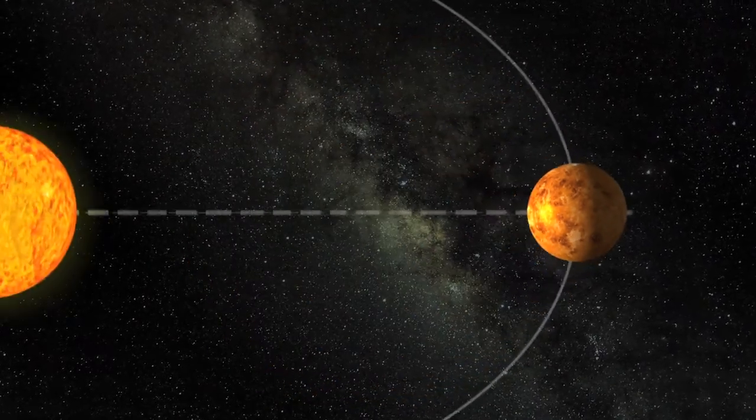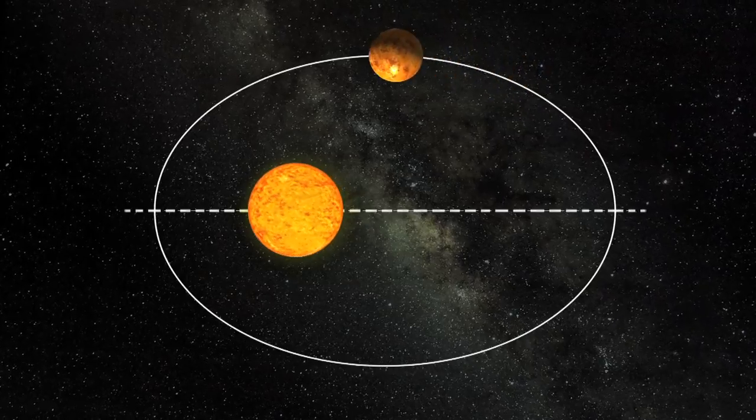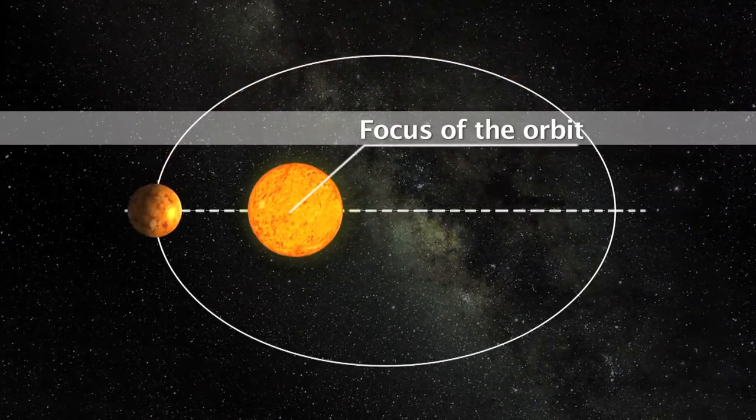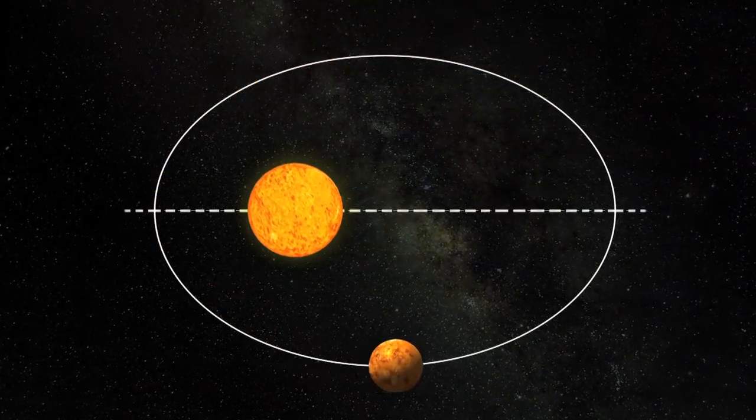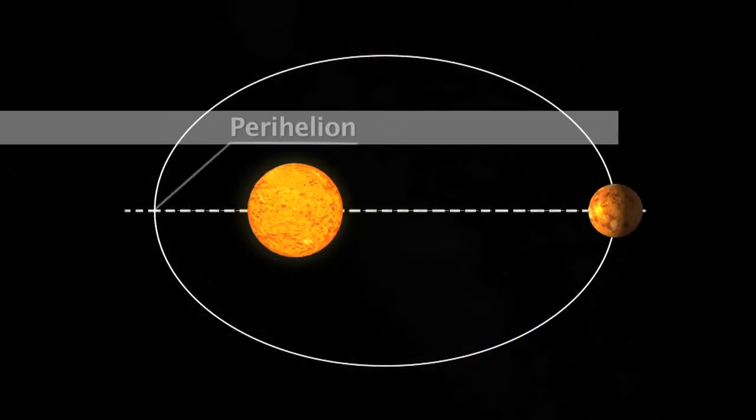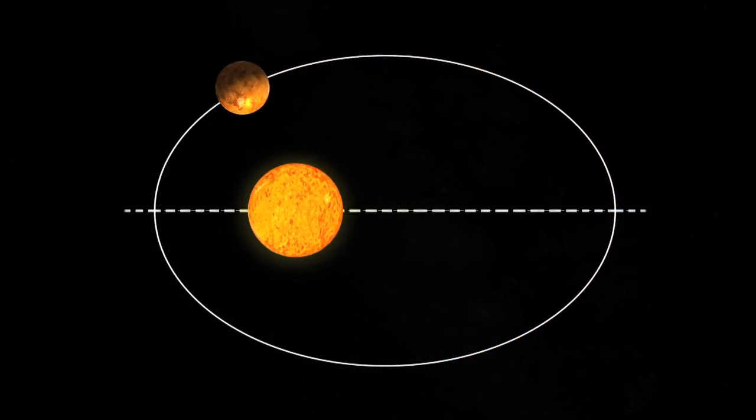It must be known that Mercury has a very elliptical orbit and the Sun is in one of the focuses. If the Sun and Mercury were the only objects in the universe, Mercury's perihelion would be at the same place at each revolution.